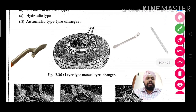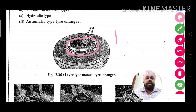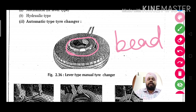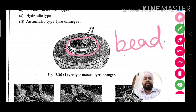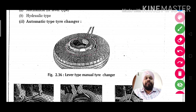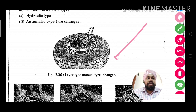There is a lever type tire changer in which the portion of the rim is called the bead. This is the portion which we have to remove from the rim. We have to carefully separate the bead from the rim.